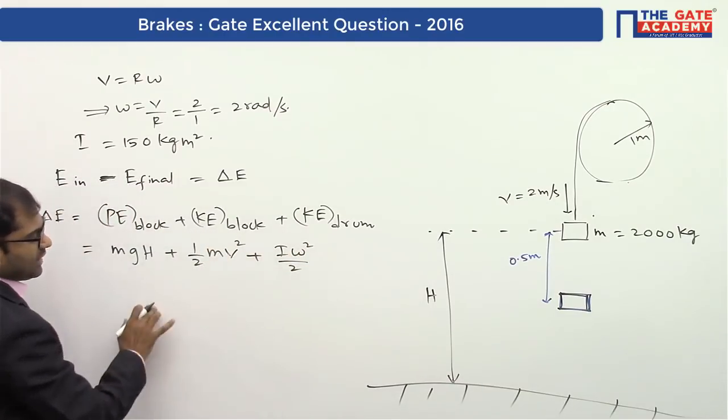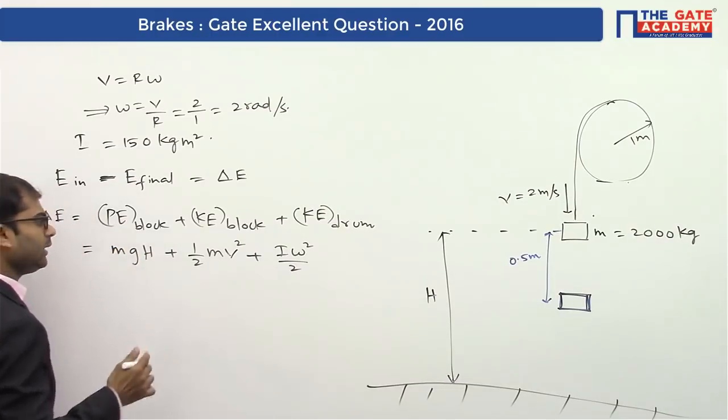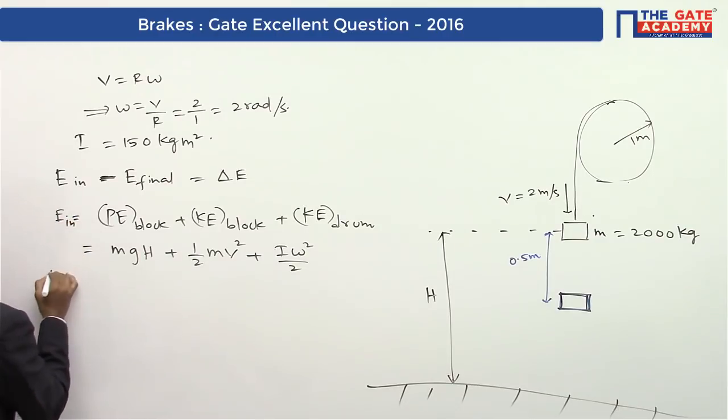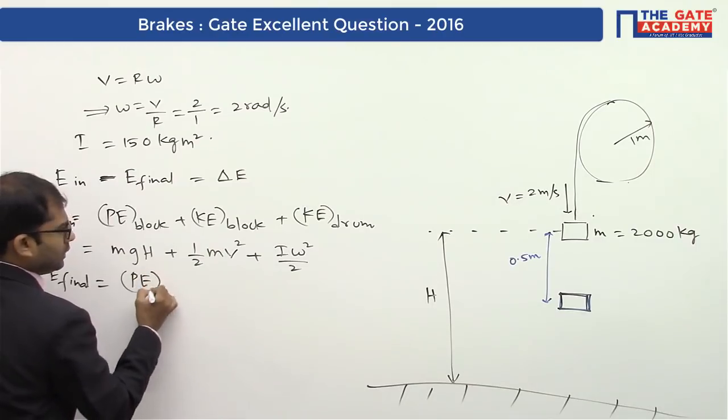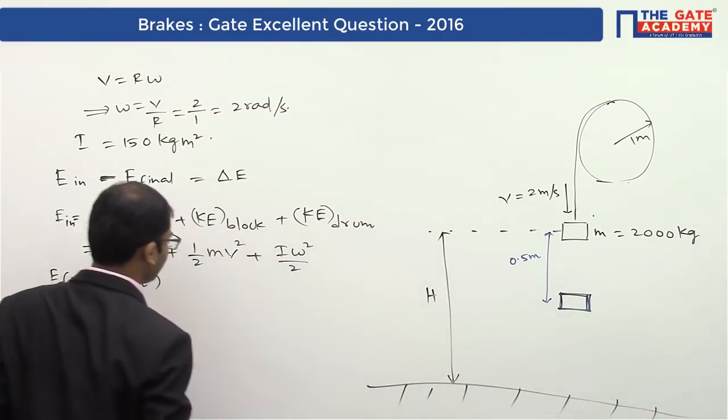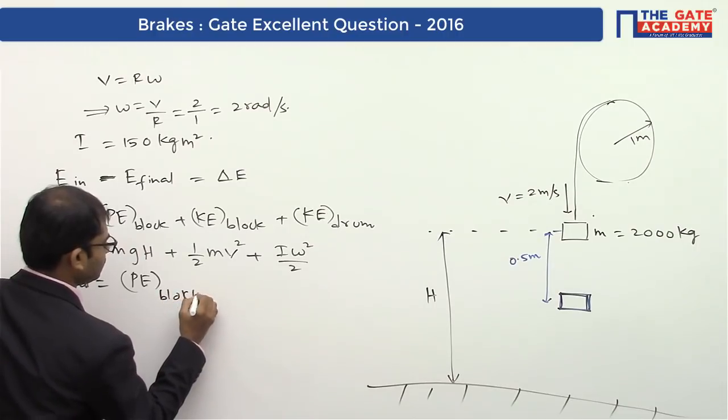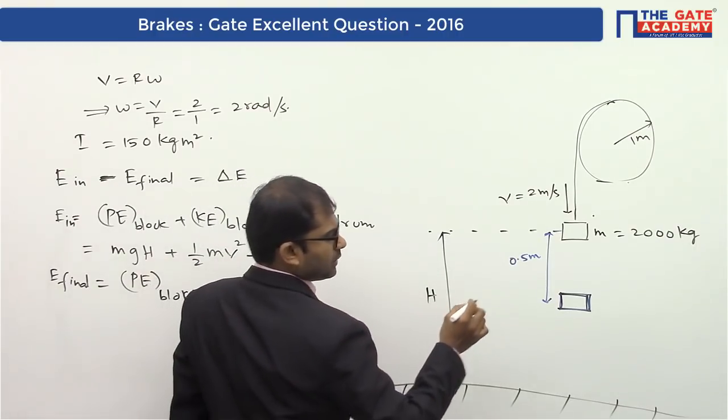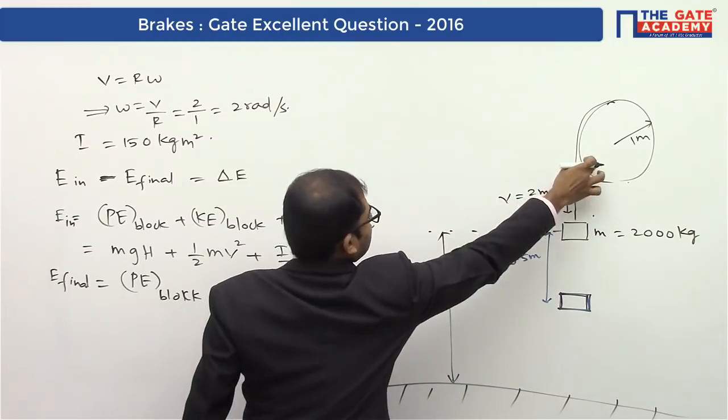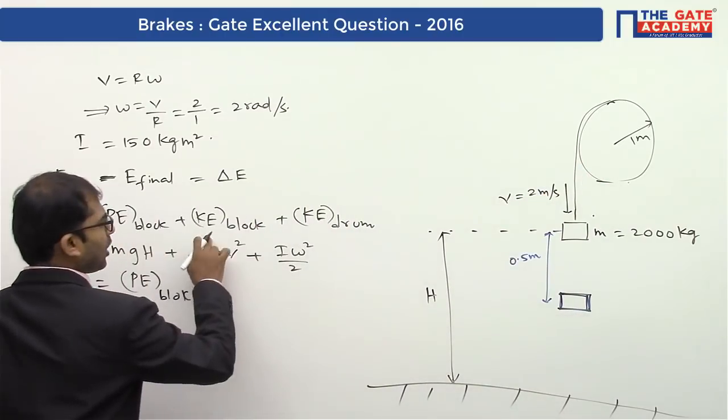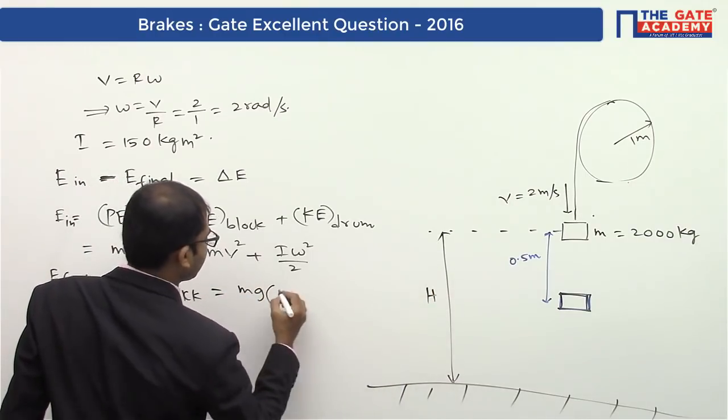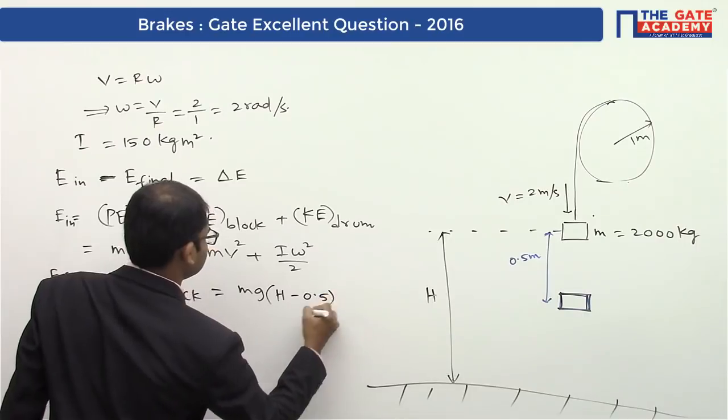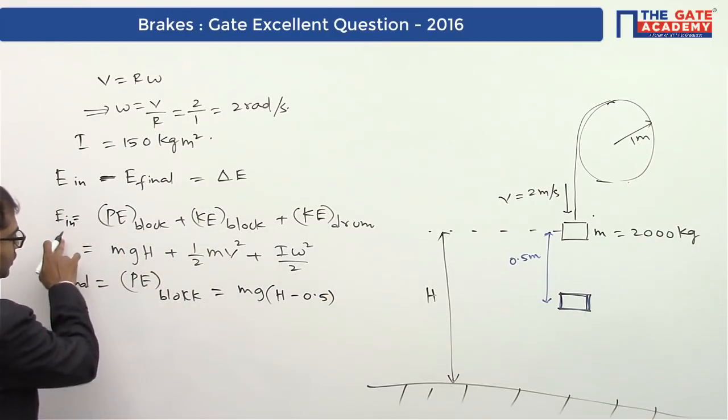We know all the values except h, but don't worry about this. Final energy will be: the block is at a lower height so still has some potential energy, but it's coming to rest so kinetic energy of the block and drum become zero. This gives you m·g·(h - 0.5). To get ΔE, take the difference.